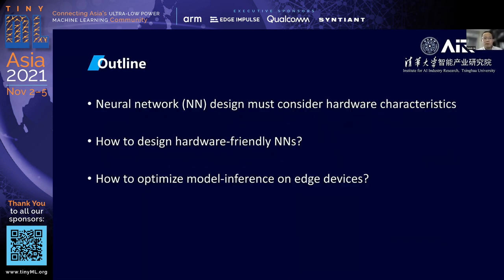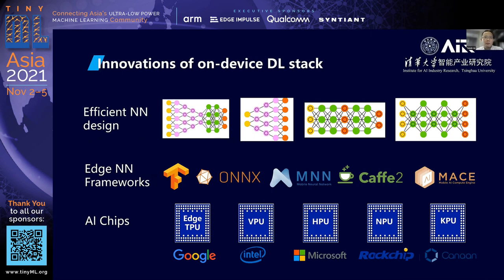Specifically, I will talk about three things. The first is arguing that efficient neural network design must consider hardware features. The second is how to design hardware-friendly neural networks. And the third is how to optimize model inference on edge devices. If we look at the on-device deep learning stack, there are innovations at different levels — from hardware design to frameworks and efficient model design for mobile devices.